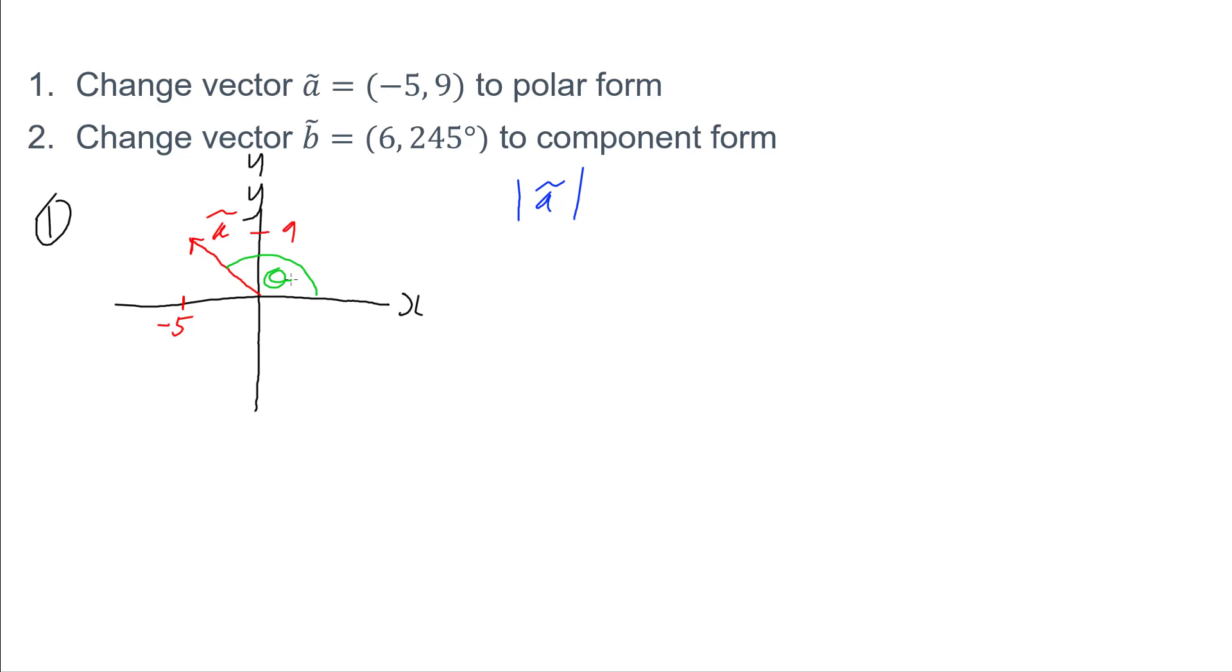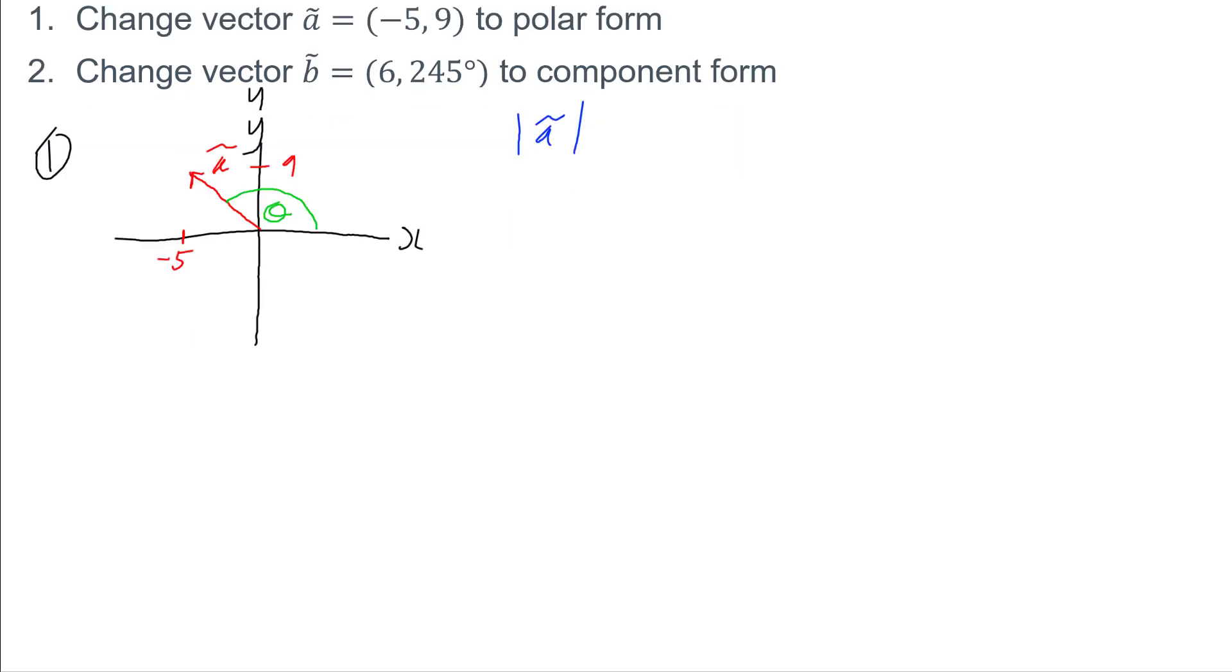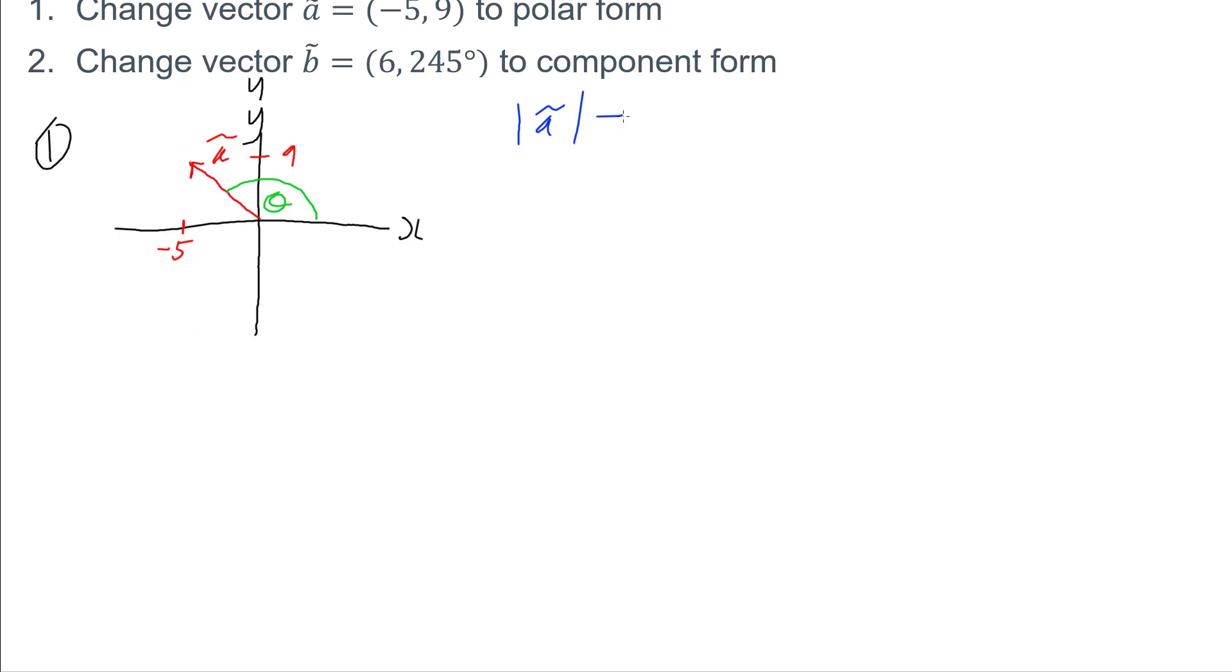So if we have a look at the magnitude first. The magnitude is easy, because it's just using Pythagoras. It's the square root of the x component squared, plus the y component squared. So if I put this in, that gives me negative 5 squared, plus 9 squared. Working this out, I need the square root of 106, which means the magnitude of vector A is going to be 10.3.